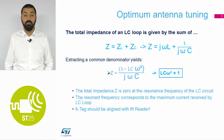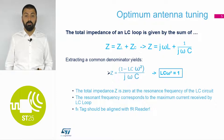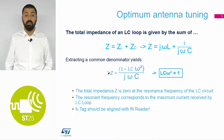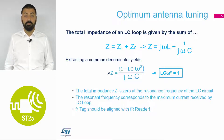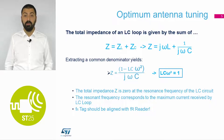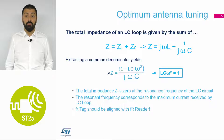The sum of ZL and ZC gives our total impedance, and if we extract it on a common denominator, we can say that LC·ω² equals 1. This means that the total impedance Z is 0 at the resonance frequency of the LC circuit. Furthermore, the LC resonance frequency corresponds to the maximum current received by the LC loop. It is important to note that the resonance frequency of the tag should be aligned with the resonance frequency of the reader.